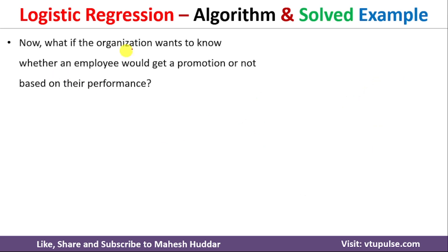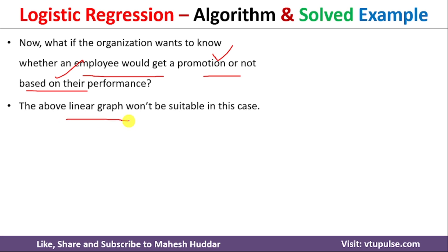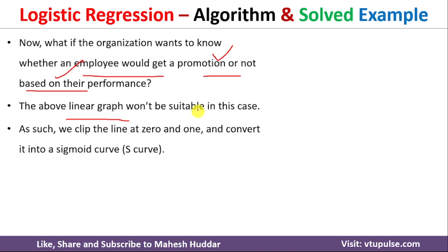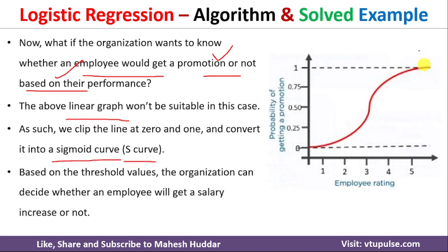But assume the organization wants to know whether an employee should be given a promotion or not — only two possibilities. In such cases, the linear regression model won't help. Instead, we need something called the sigmoid curve or S-curve. Based on the employee rating, we want to find the probability of getting a promotion, and based on that probability, we decide whether the employee should be given promotion or not.